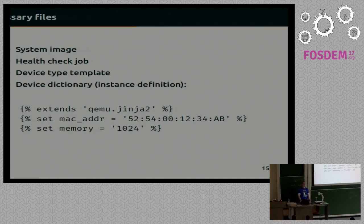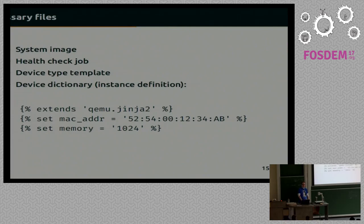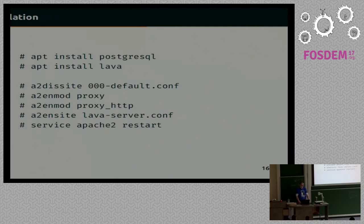Actually, the only file you would need to set it up is a device dictionary, which serves as a definition of the instance of your device. For QEMU, it's just three lines — which you'll see at the bottom — that only tell it which device template should be in use, assign a MAC address, and set the available memory. Thanks to LAVA packages, all you have to do on your host machine is to prepare the database for LAVA and install the meta package. Everything else is resolved automatically with dependencies.